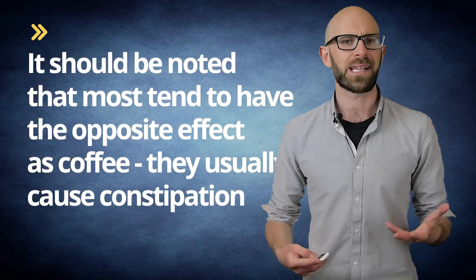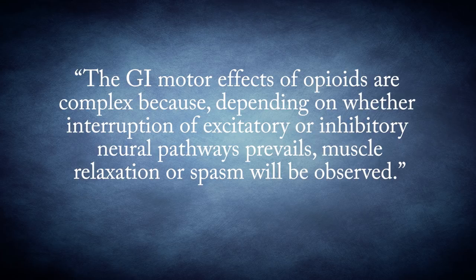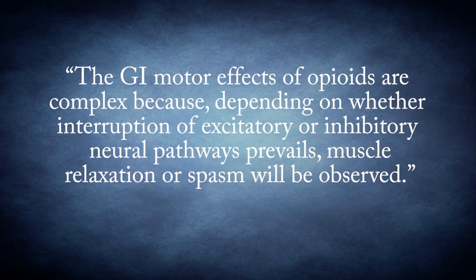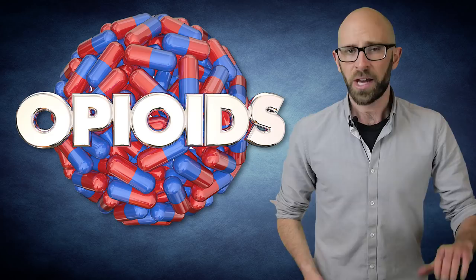The debate arises because there are so many different reactions that can take place depending on which specific type of opioid receptor gets stimulated. It also matters at what point in the signaling process of neurons you stimulate the receptor. As one researcher put it, the GI motor effects of opioids are complex because, depending on whether interruption of the excitatory or inhibitory neural pathways prevails, muscle relaxation or spasms will be observed. When you combine the complex nature of opioids with the fact that there haven't been many studies specifically identifying the regulatory properties of ORL1, you begin to understand the obstacles facing researchers.